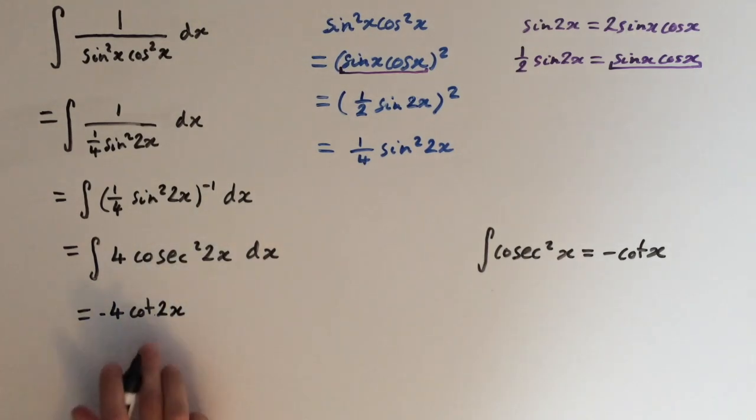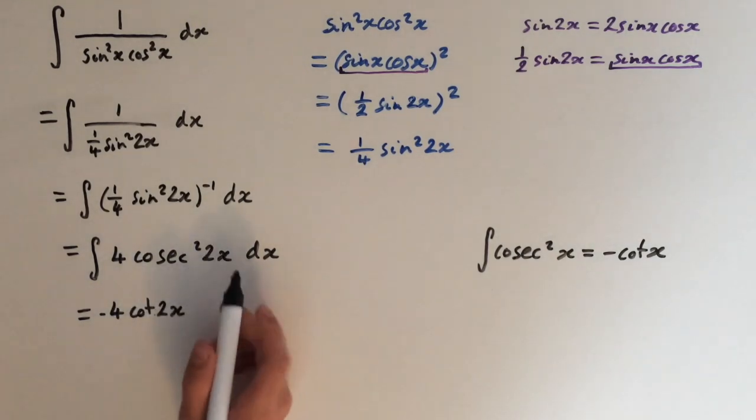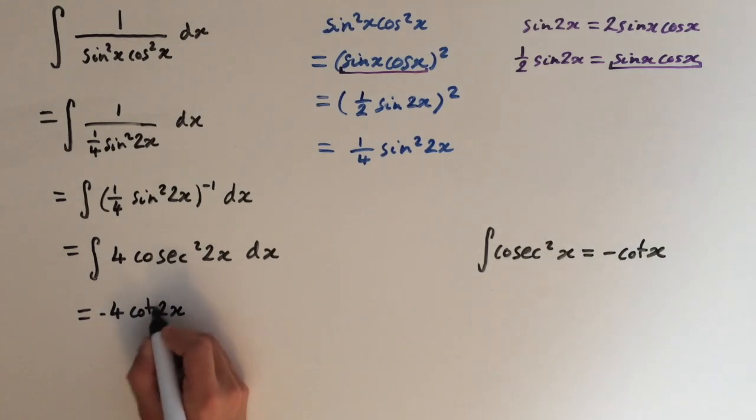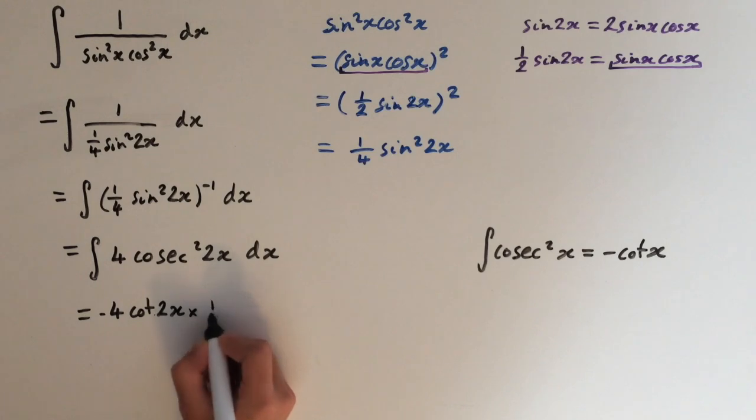Because if we differentiate this now, we'll get 4 cosec squared of x times 2, because the derivative of 2x is just 2. So we basically have to multiply this by 1 half.